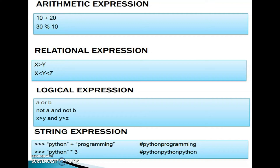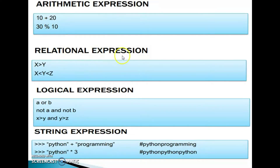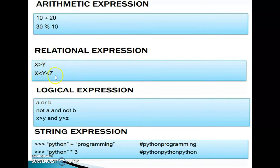Arithmetic expressions use arithmetic operators. For example, 10 plus 20, or 30 modulus 10. Relational expressions use relational operators, for example x greater than y, or x less than y less than z.